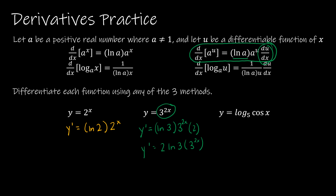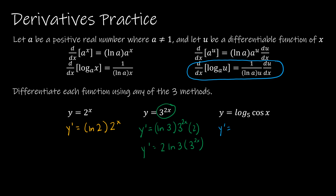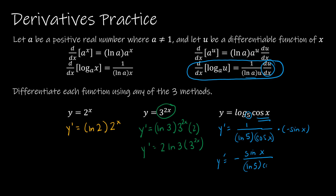For the last question, we're dealing with a logarithmic function. Cosine of x does have its own derivative. Taking the derivative of log base 5 of cosine x: the base is 5, so it's 1 over the natural log of 5, divided by u — which is cosine x — times the derivative of u. The derivative of cosine is negative sine x. So the final solution is negative sine x over the natural log of 5 times cosine x.